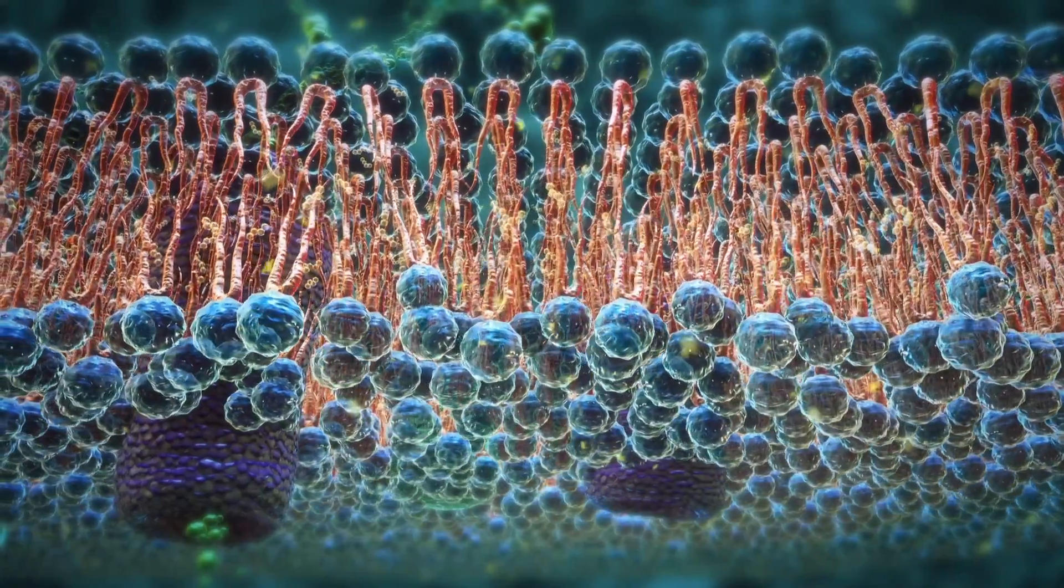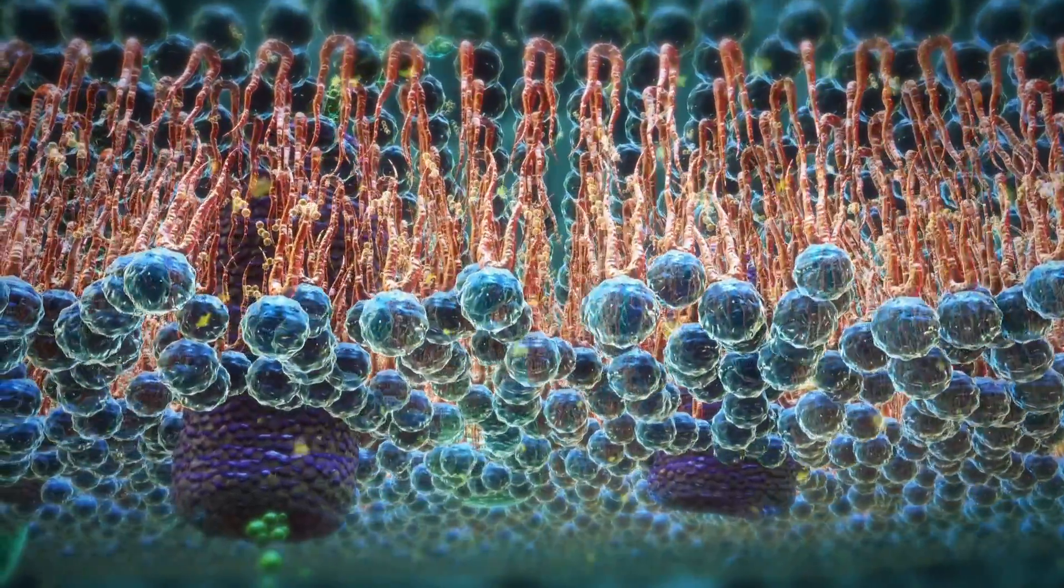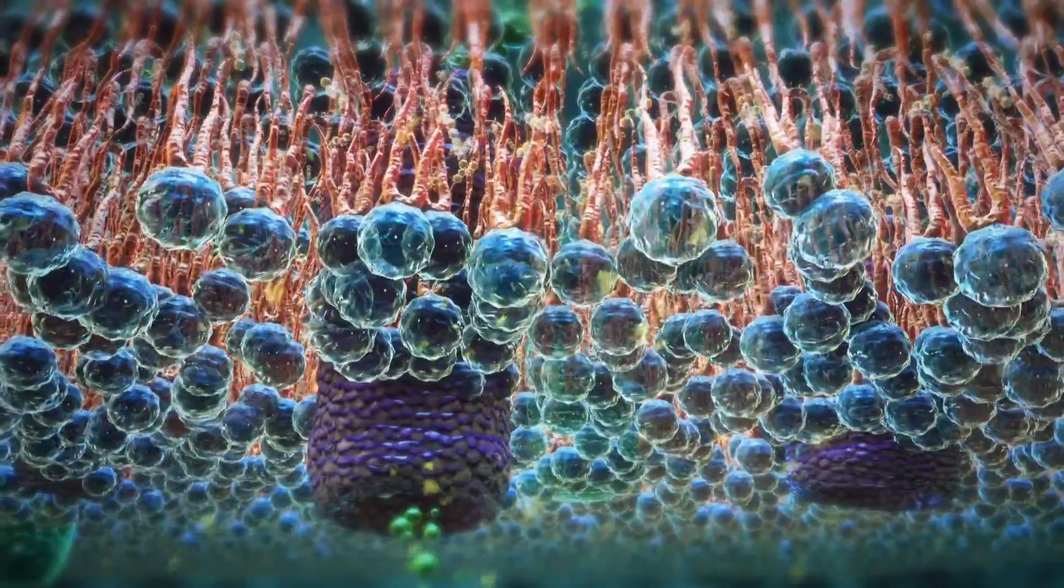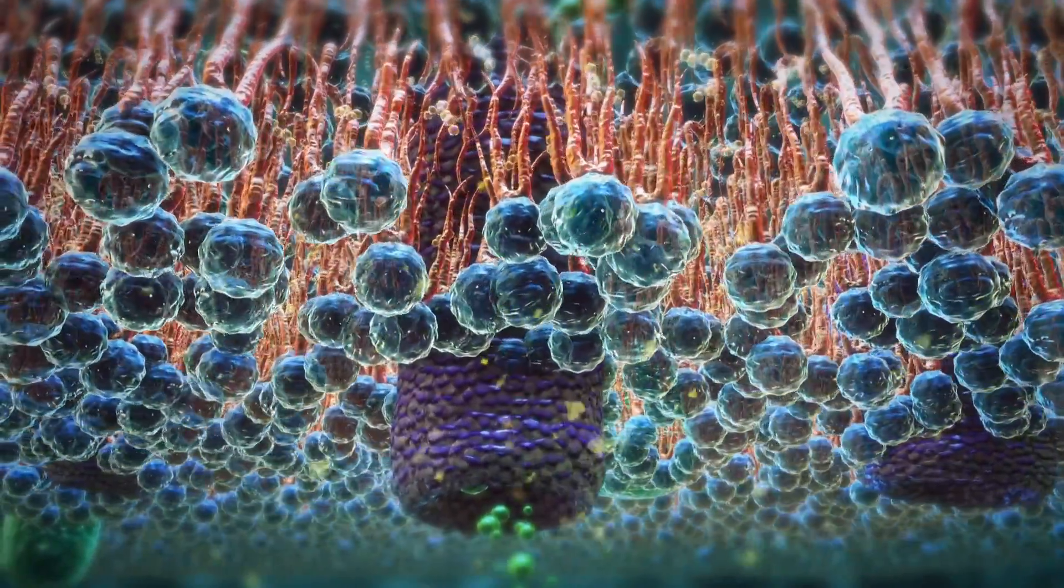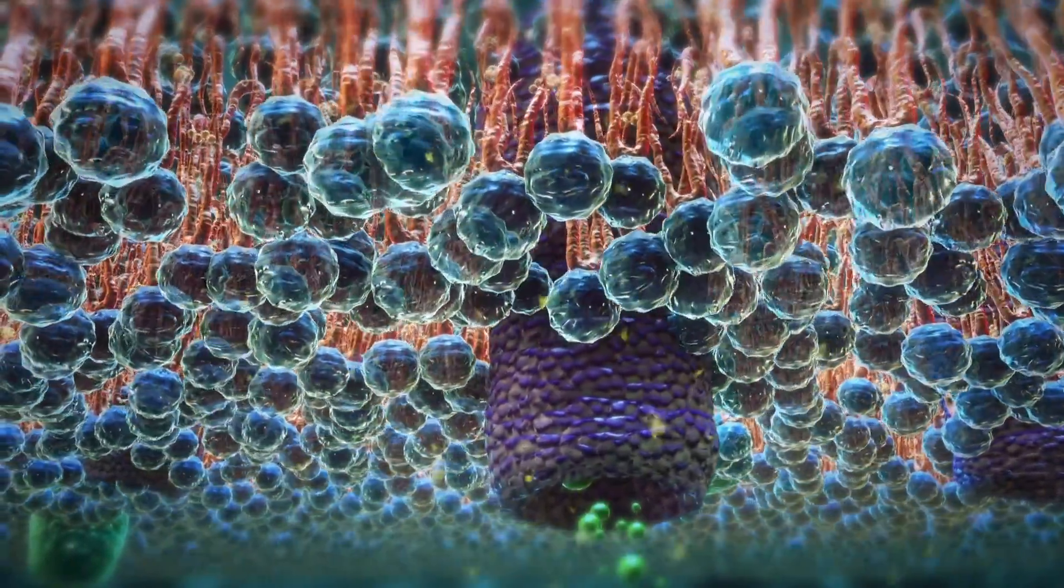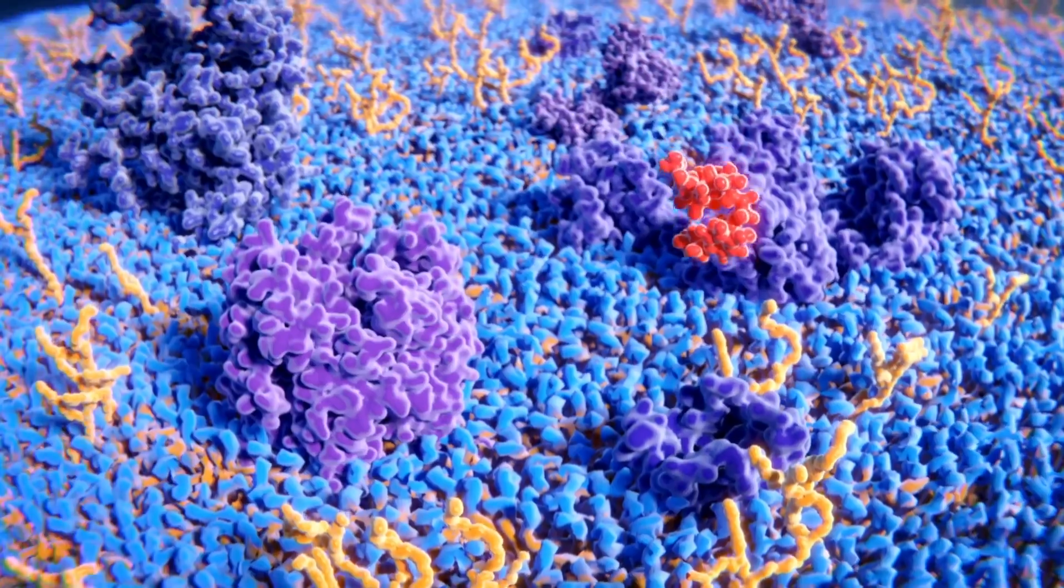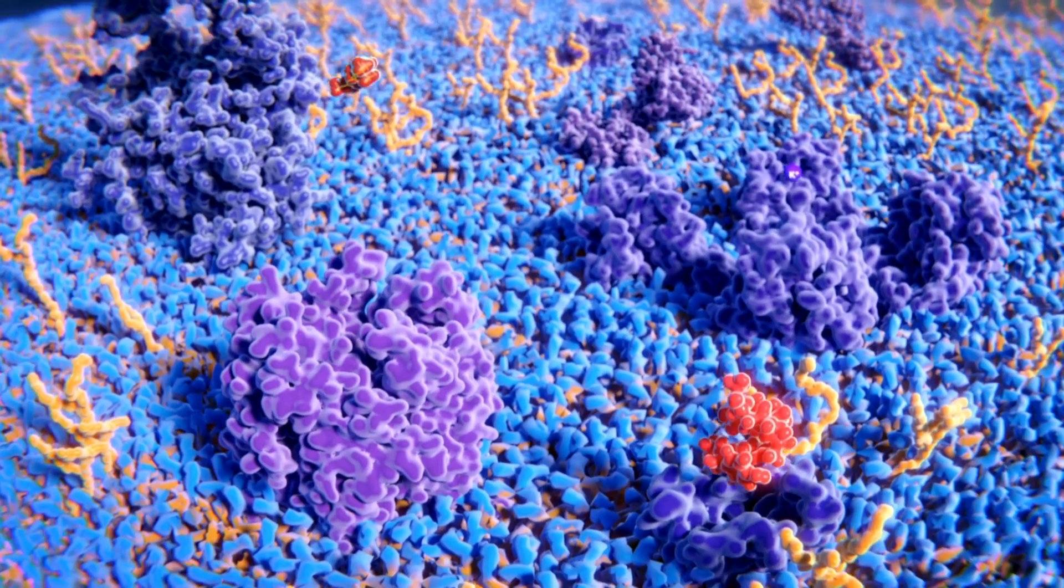So why is the cell membrane so important? Without it, the cell wouldn't be able to control its environment. It couldn't take in the nutrients it needs, get rid of waste, or protect itself from harmful substances. The cell membrane is essential for the cell's survival, making it one of the most important parts of any cell.